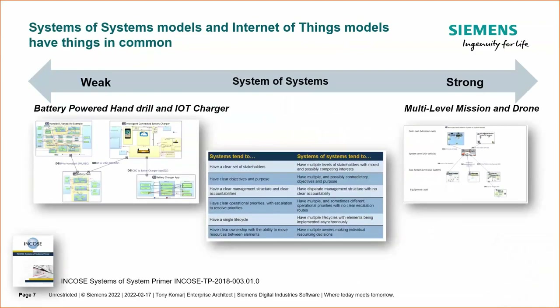With Capella, I feel you can model a variety of these. You can go from a very strong traditional definition that fully meets the definition of a system of systems — like a mission-level drone application, which I'll walk through — or you can do what I'd call a weaker system of systems, where some constituent systems meet the definition but others may just be components. That's typical of Internet of Things types of problems, where you're not completely a true system of systems.